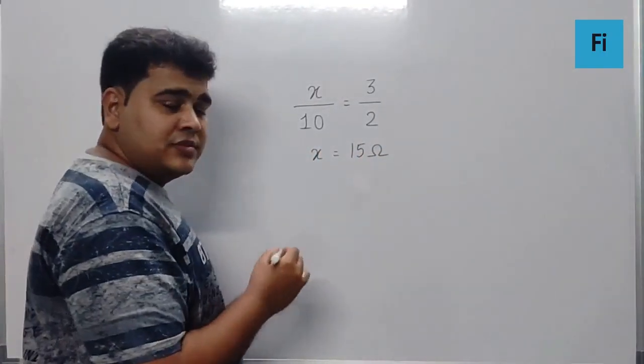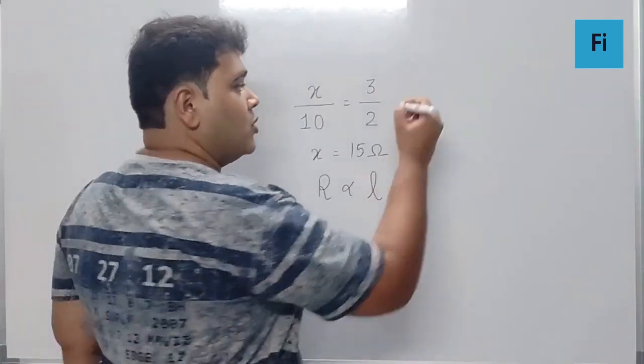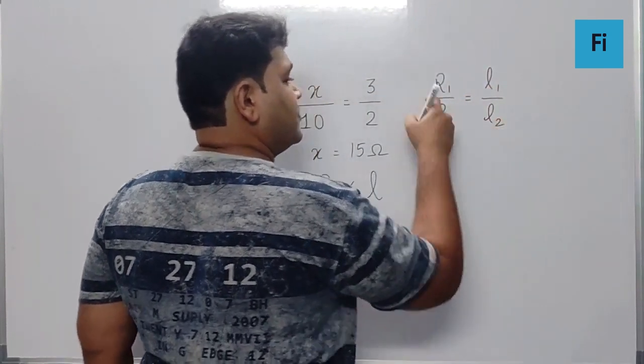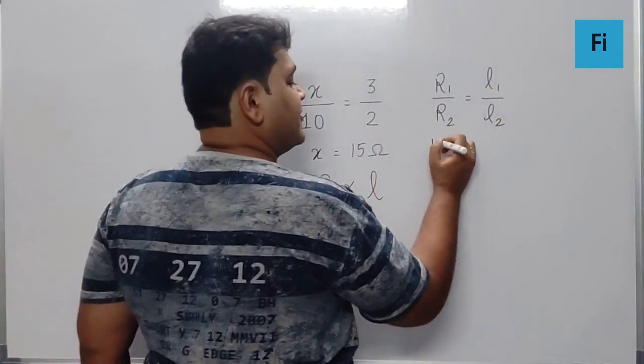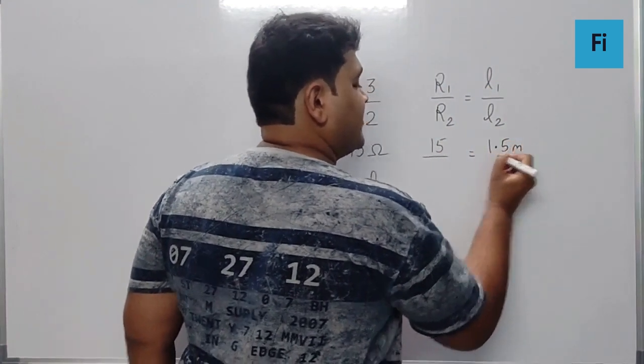Now we know the resistance is directly proportional to length, which means we can say R1 by R2 is actually L1 by L2. And the resistance one is 15 ohm for which the length was 1.5 meter.